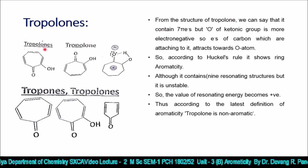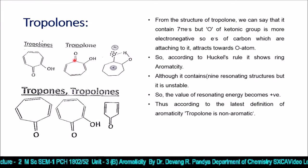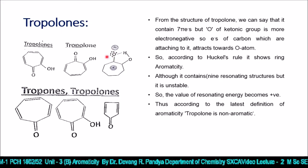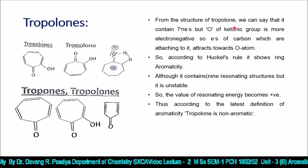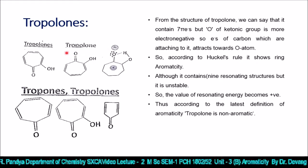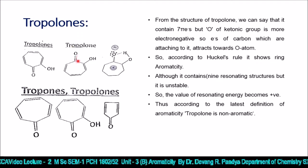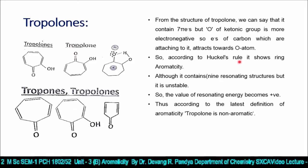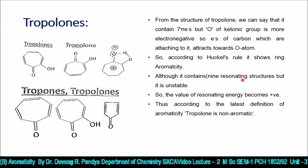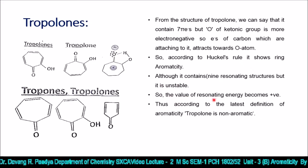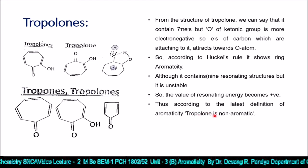Tropolone contains seven π electrons, but the ketonic oxygen is more electronegative and pulls electron density from the adjacent carbon. According to Hückel's rule it shows ring aromaticity, and it has nine resonating structures — but these structures are unstable, making the resonance energy positive. According to the latest definition of aromaticity, tropolone is non-aromatic.